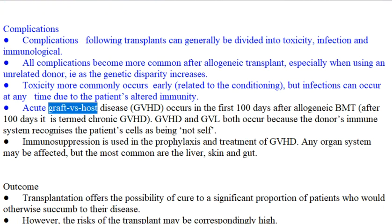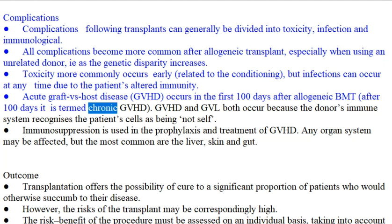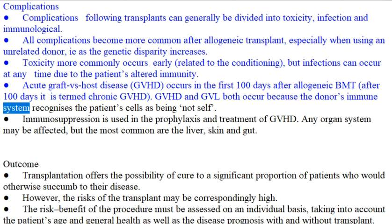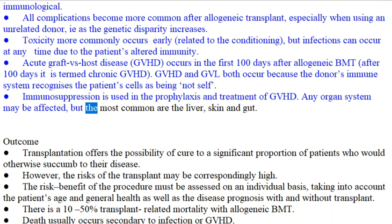Acute graft-versus-host disease (GVHD) occurs in the first 100 days after allogeneic BMT; after 100 days it is termed chronic GVHD. GVHD and GVL both occur because the donor's immune system recognizes the patient's cells as being not-self. Immunosuppression is used in the prophylaxis and treatment of GVHD. Any organ system may be affected, but the most common are the liver, skin, and gut.